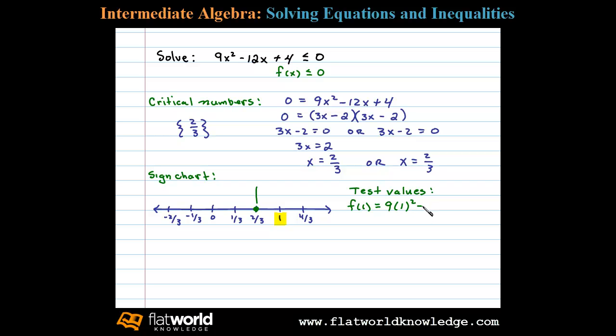f(1) will be equal to 9 times 1 squared minus 12 times 1 plus 4, or 9 minus 12 plus 4, which equals negative 3 plus 4, and that's going to be positive. In fact, any test value you choose in this region will yield positive results.